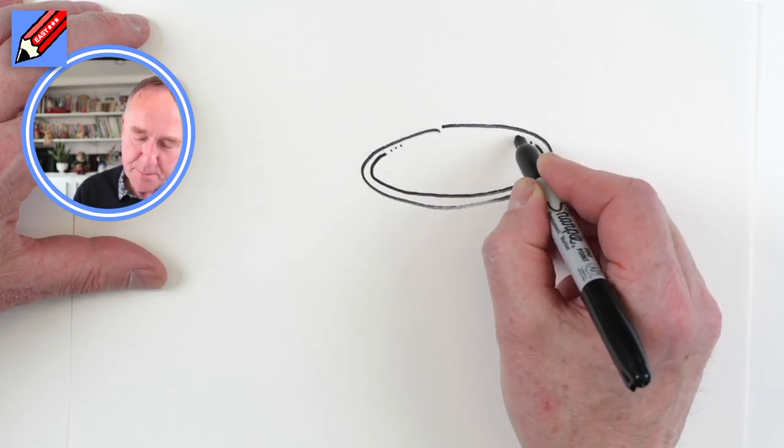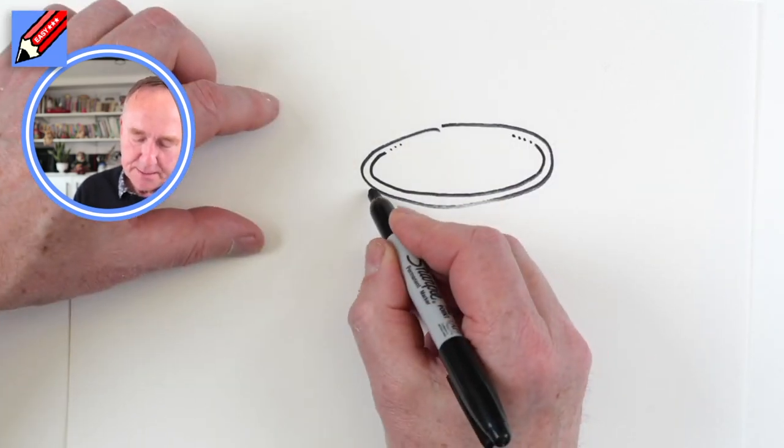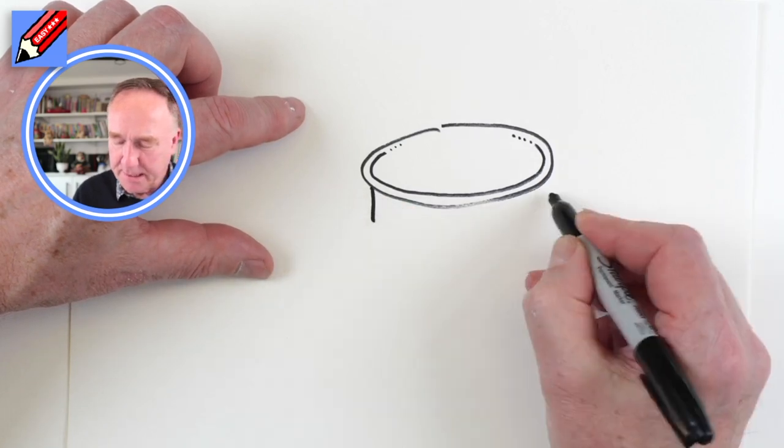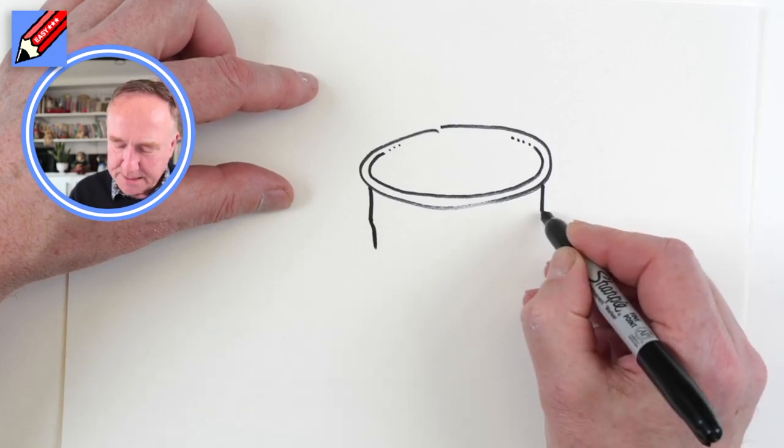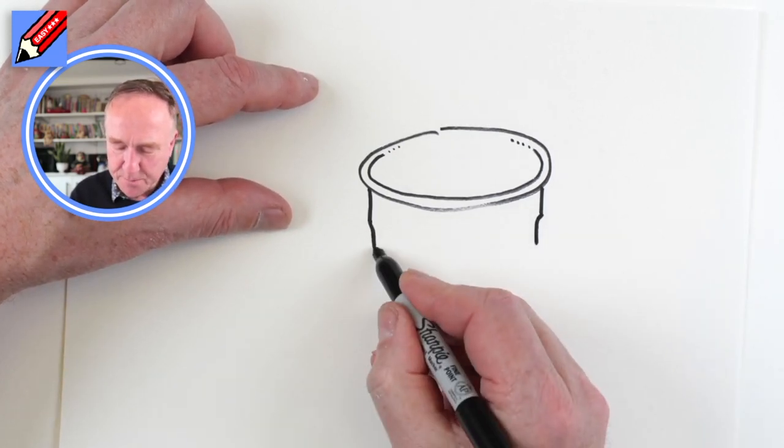And you can make it kind of disappear with little dots. And then we're going to bring it down there and down there, sort of come in a little bit. And then just sort of curve it down that little bit as well.